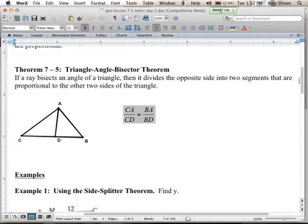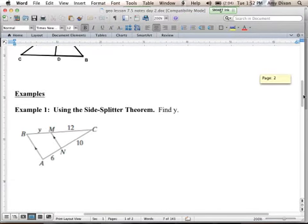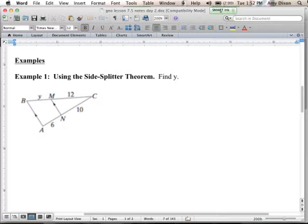Now, if you're still confused, these examples will help you. Example one, it says using the side splitter theorem, find Y. We see that MN is parallel to one side of the triangle, and it intersects the triangle. So we can set up a proportion.